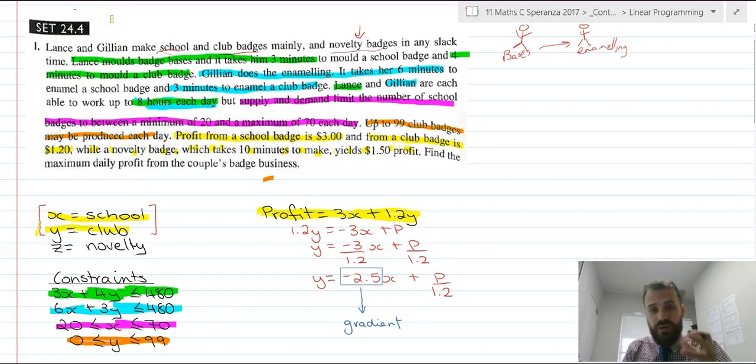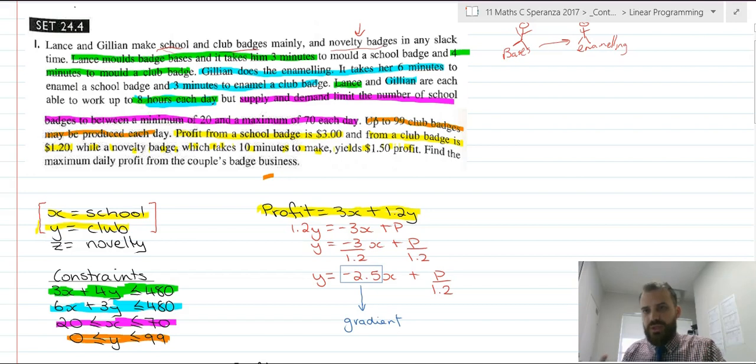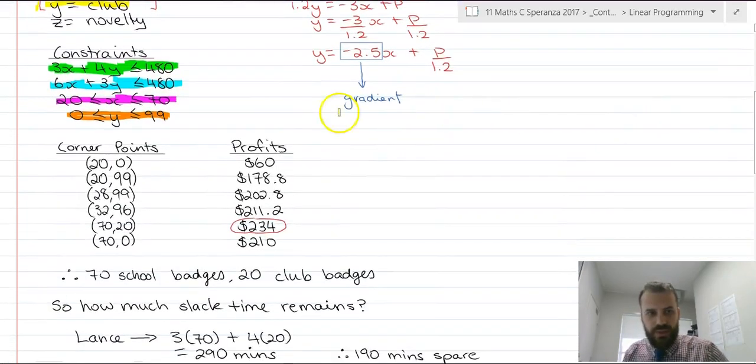Now, feel free to fire up Geogebra, come up with those constraints, try a function with a gradient of negative 2.5, and see if you can find where the maximum profit is. Pause it, because I'm about to spoil the answer for you. All right, so if you put that into Geogebra, you should end up with heaps of corner points. Now, you should just be able to use the geometric approach and come up with this as being the best split between X and Y.